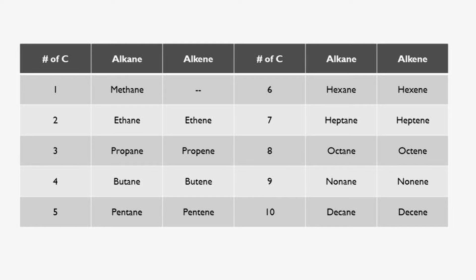Here is a table that correlates the number of carbon atoms with the name of the alkene. Two carbons is ethene, better known as ethylene. Three carbons is propene. Four carbons is butene. Pentene for five, hexene for six, heptene for seven, octene for eight, nonene for nine, decene for ten, and so on and so forth.